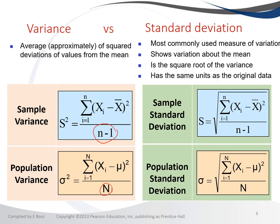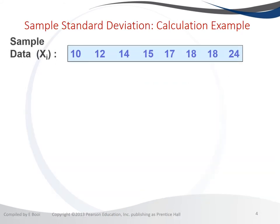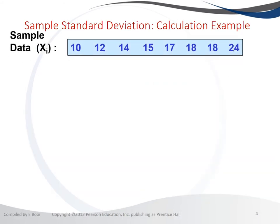The standard deviation is the square root of the sample variance, and for the population it is the square root of the population variance — you can see the formulas are the same structure. Now let's do an example on how to apply this formula. We have a dataset starting from 10, 12, and ending at 24.